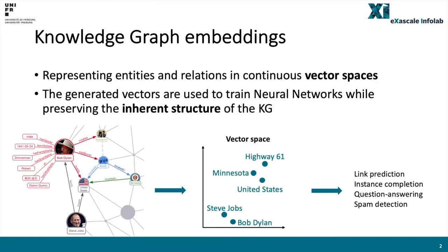Knowledge graph embeddings represent entities and relations in a knowledge graph using a vector space by learning low-dimensional vectors of entities and relations while preserving the graph properties. The learned embeddings can be used in both knowledge graph reasoning applications such as link prediction and instance completion, and out-of-knowledge graph applications such as question answering and spam detection.